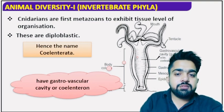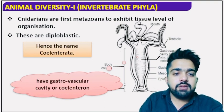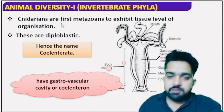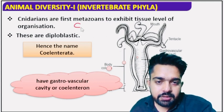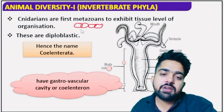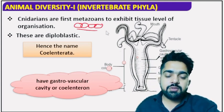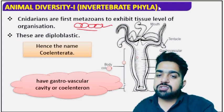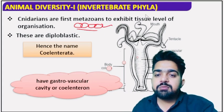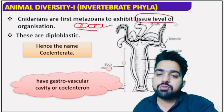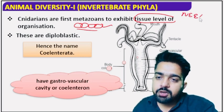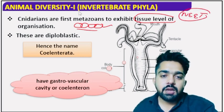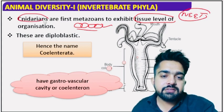Cnidarians are the first metazoans to exhibit tissue level of organization. So here we have tissue level of organization — that means cells are organized to form specific tissues. Tissues are formed here for the first time. So an important exam question: which phylum shows tissue level of organization? Answer: Cnidaria. This is an important point from an exam perspective.